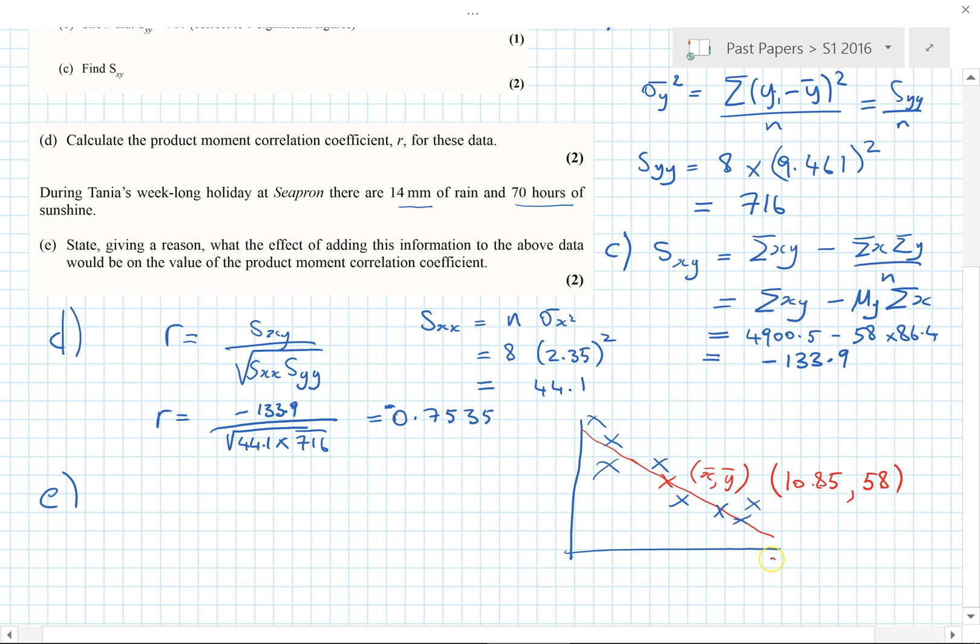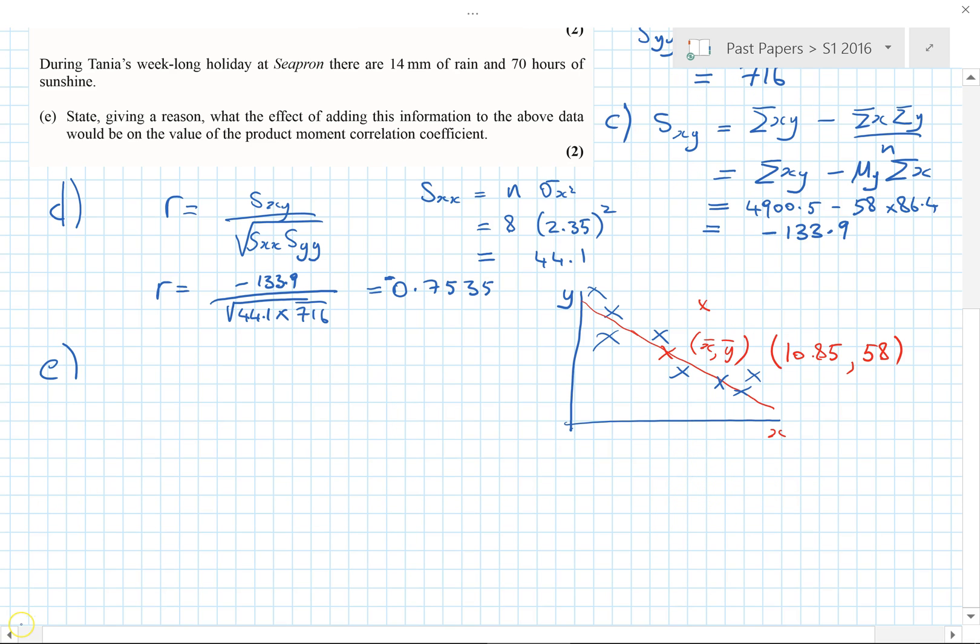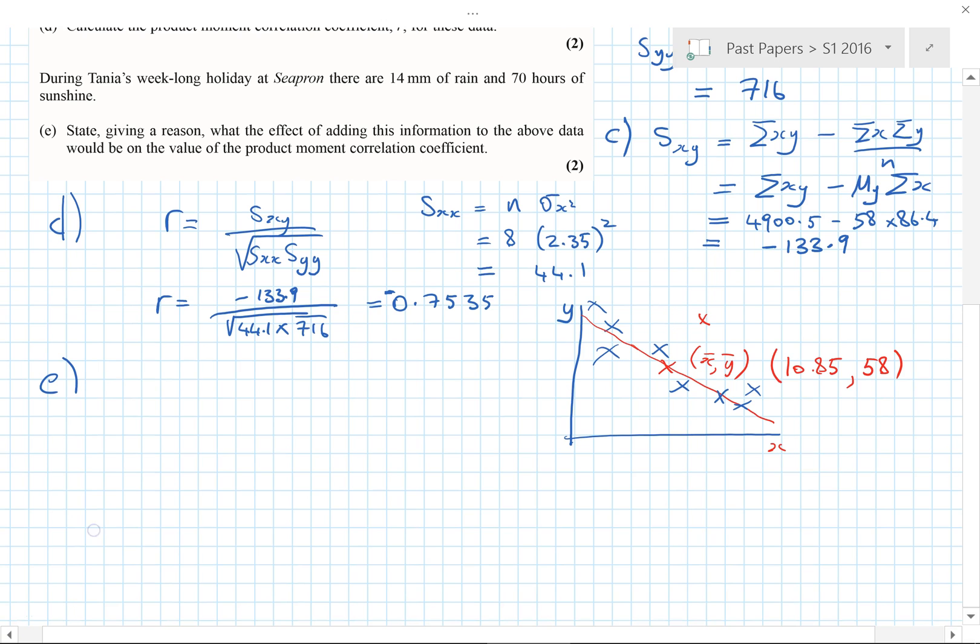Here it's saying there's a new piece of data here with 14 millimeters of rain. So this is x, 14 millimeters of rain, so that's somewhere down here. But 70 hours of sunlight, so it's kind of up here somewhere. So it's got high of both. It's both greater in rain and greater in sunshine. So how does this help us answer the question? Well, this isn't really fitting with the trend. Normally we would expect if one of them is greater than the mean, the other one is going to be less than the mean.